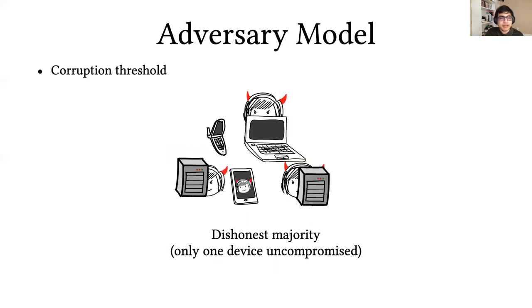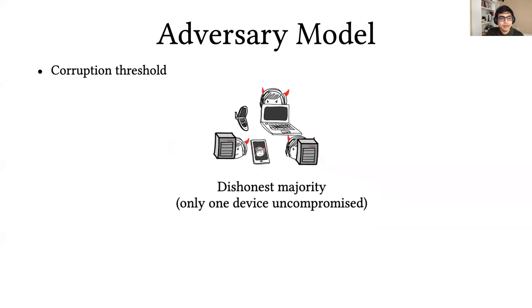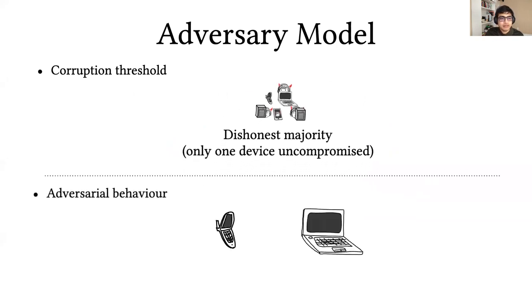The setting that we're going to consider in this work is dishonest majority, that's all devices but one are corrupt, but we're mostly going to talk about the two-party case. As for adversarial behavior, we consider malicious adversaries who can deviate arbitrarily from the protocol.